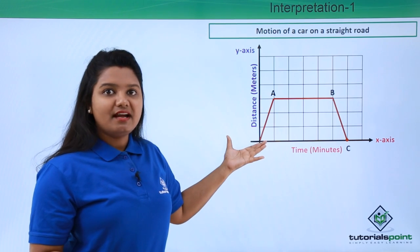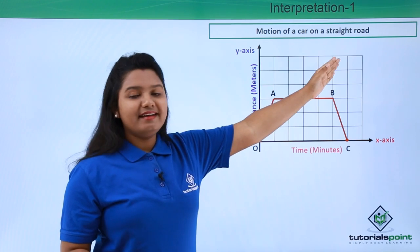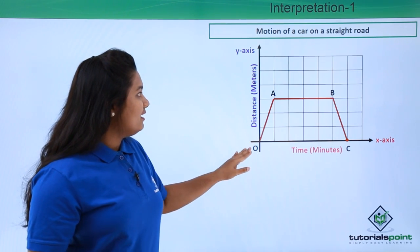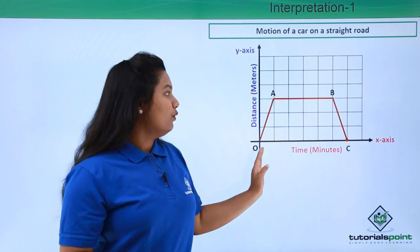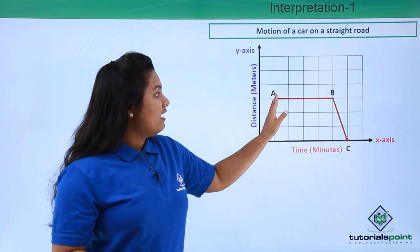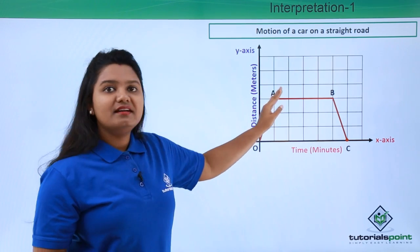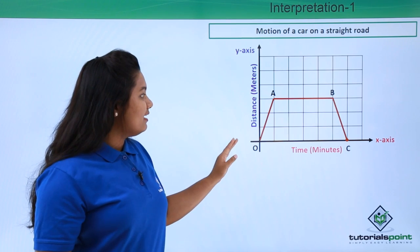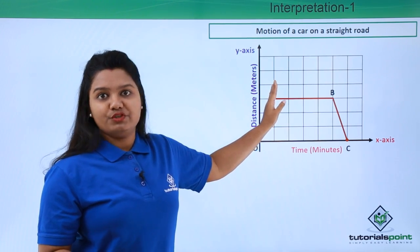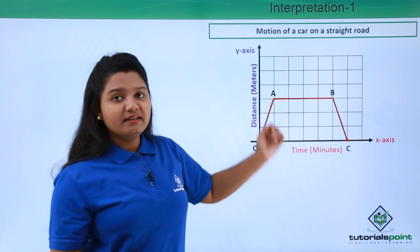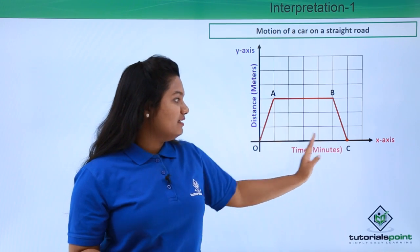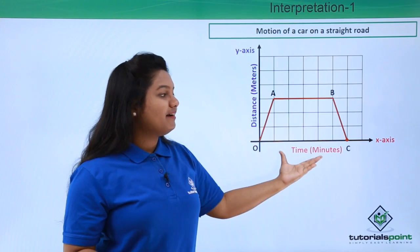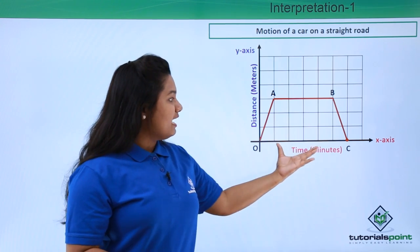First, we have to interpret this graph showing the motion of a car along a straight road. As a whole it is not a straight line, so we will study it in terms of sections OA, AB, and BC. Until point A, the body was traveling with a uniform speed since the distance-time graph is a straight line inclined to the x-axis. From A to B, there is no increase or decrease in distance with time and the line is parallel to the x-axis.